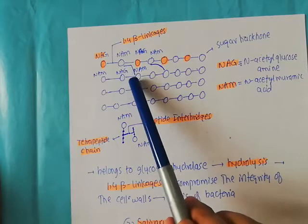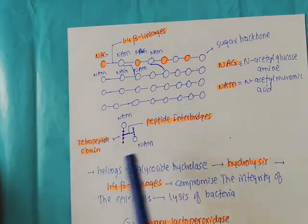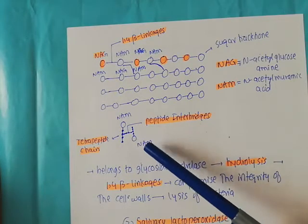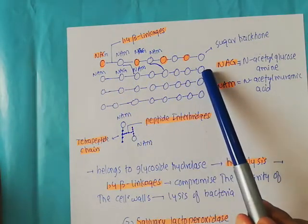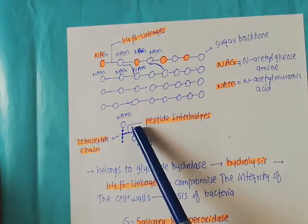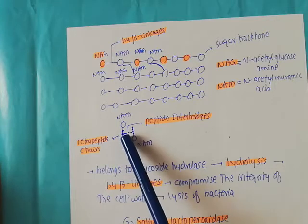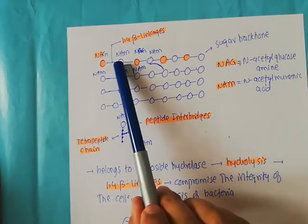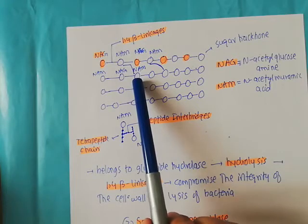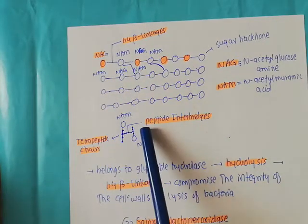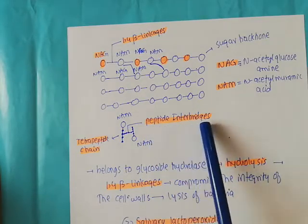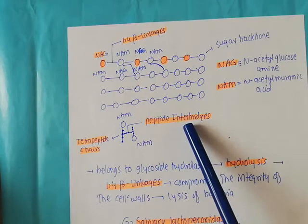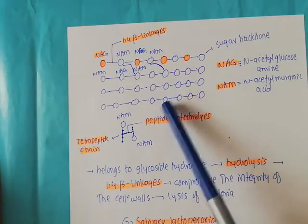The NAM residues are also attached to a tetrapeptide chain. For example, if this is one NAM, a tetrapeptide chain is attached to it. Similarly, another NAM present in another layer of the sugar backbone also has a tetrapeptide chain. These tetrapeptide chains are connected to each other by peptide interbridges. So the presence of 1-4-beta linkages, the tetrapeptide chains, and the peptide interbridges give the peptidoglycan layer its structural stability.